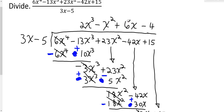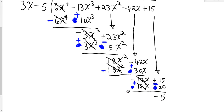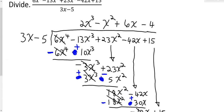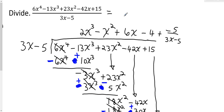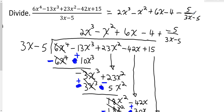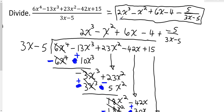When you have a remainder, if it's 0 you're done, but when you do have one, the last step is to take that remainder and add it to your quotient as the numerator of a fraction divided by the original divisor, 3x minus 5. So the final answer is 2x cubed minus x squared plus 6x minus 4, minus 5 over 3x minus 5. That is the final answer, found using long division.